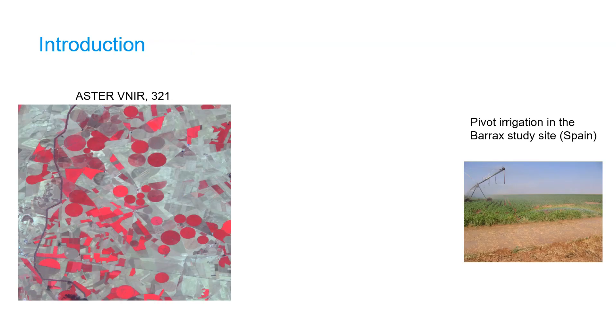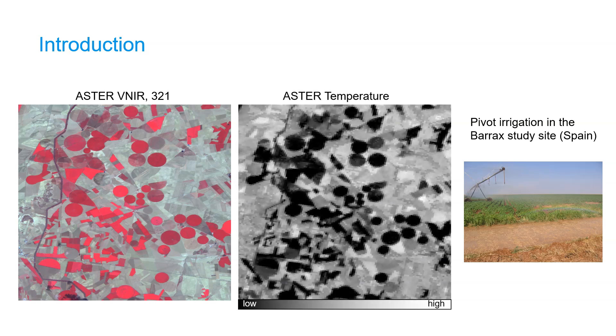When we look from space at an agricultural area with pivot irrigation, like here in Barracks, Spain, we can clearly see that the near infrared reflection inside the pivots with healthy crops is high. When we look at the land surface temperature image of the same area, we can see that the temperature inside the irrigated pivots with growing crops are much lower than in dry surroundings. In the next slides we will explain this using the surface energy balance.